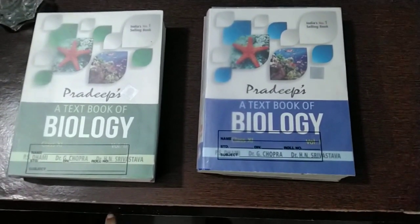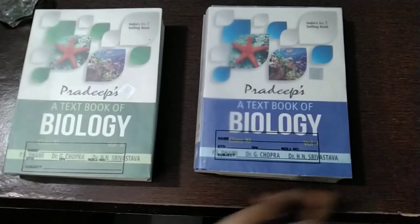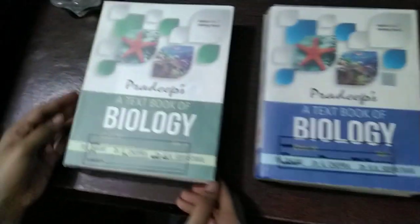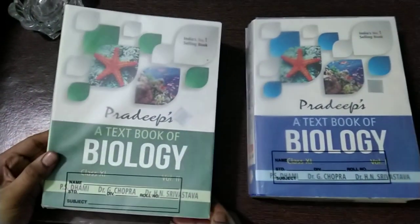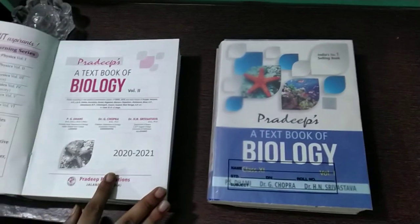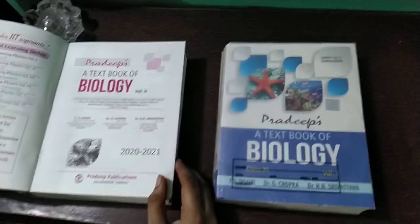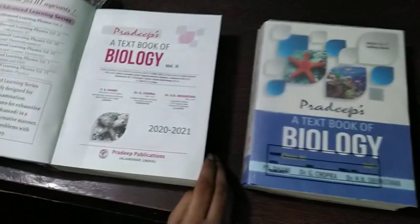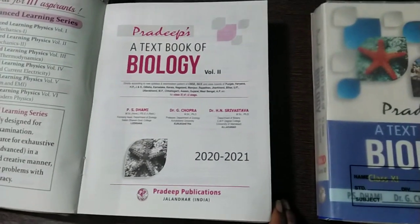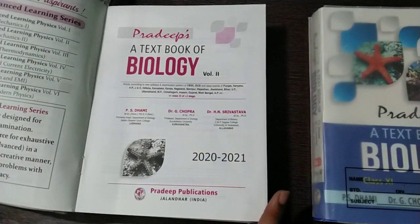This book comes in two volumes. Volume 1 is of blue and white color and volume 2 is of green and white color. For me, this is a perfect book as a reference book for class 11. Their writers are P.S. Dhami, Dr. G. Chopra and Dr. H.N. Srivastav.